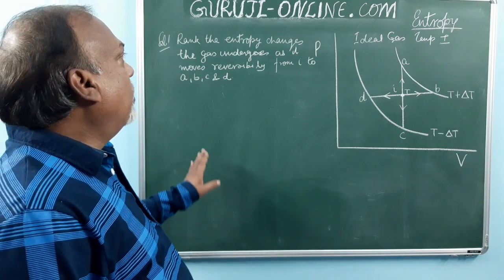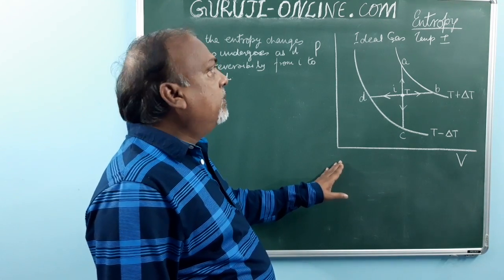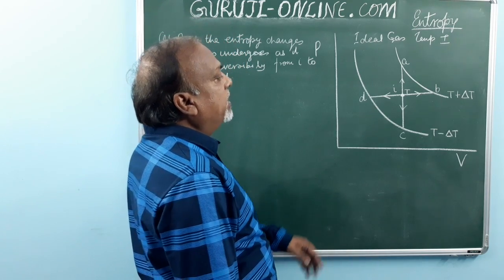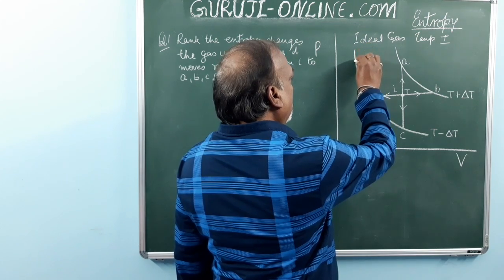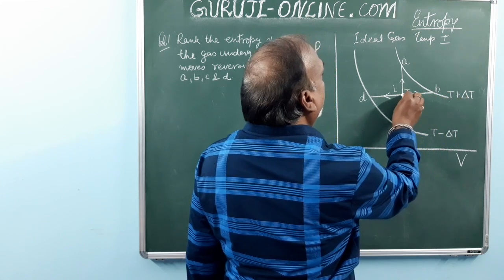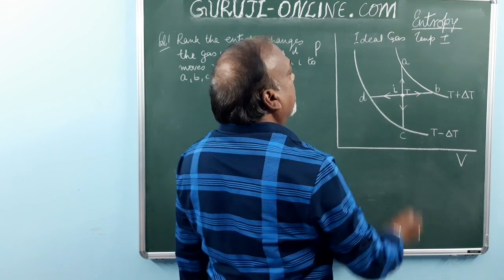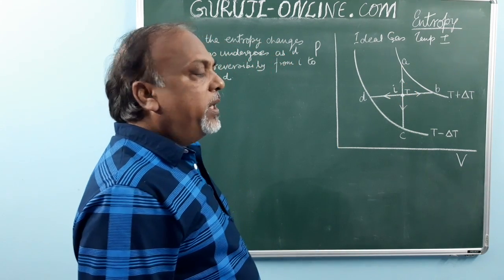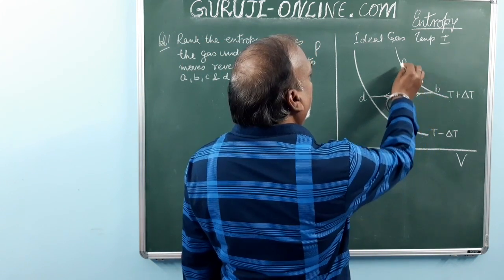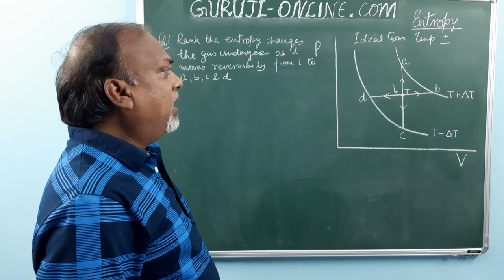This is question number 1. We have an ideal gas and a graph between pressure and volume. The gas is at temperature T minus delta T and T plus delta T, with the ideal gas initially at temperature T. It is making four processes from I to B, I to A, I to C, and I to D. These are all reversible processes.